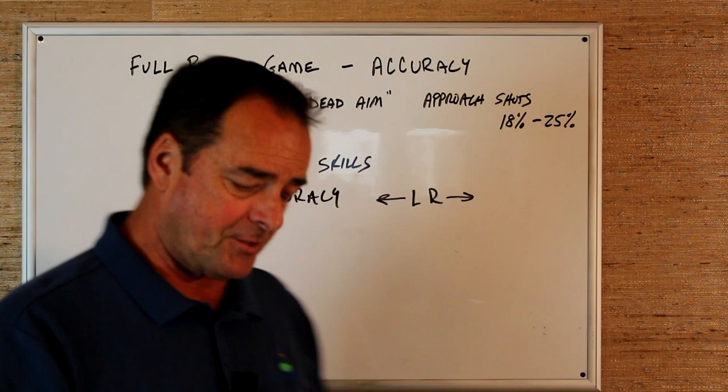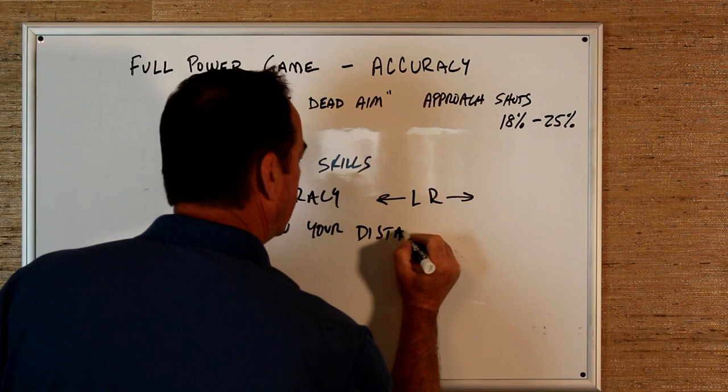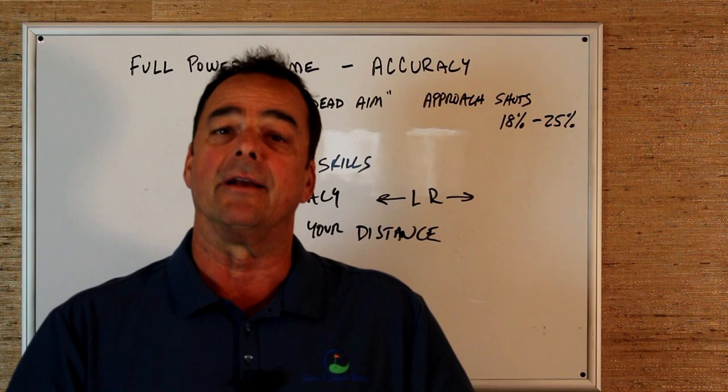And the third essential element is we want to know our distances. So you take every club in the bag and record your distance and have it all written down and ready to go.